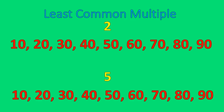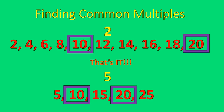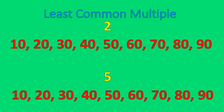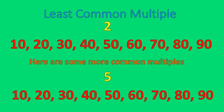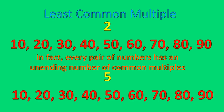If we kept going on those patterns, we'd get 10, 20, 30, 40, 50, 60, 70, 80, 90 — those are all common multiples of 2 and 5. For example, 50: 2 times 25 is 50, and 5 times 10 is 50, so 50 is a common multiple of both. In fact, every pair of numbers has an unending number of common multiples — they go on infinitely for any set of numbers.